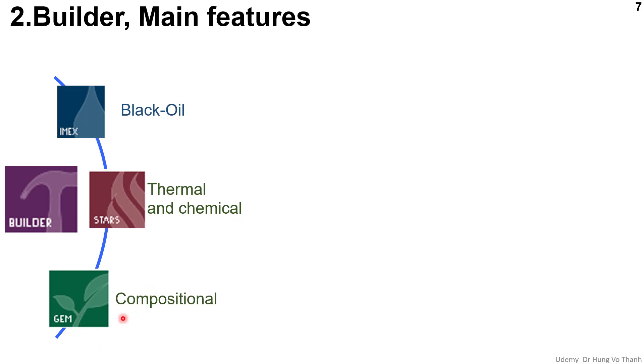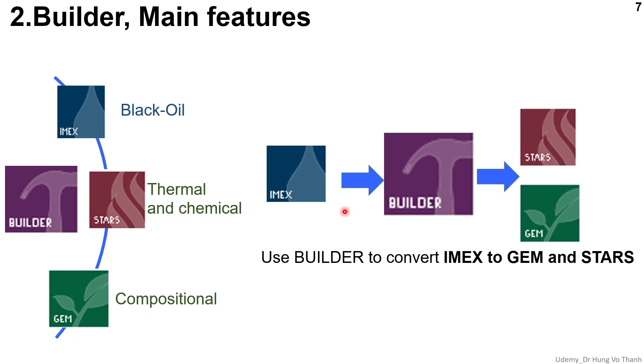Basically, you need to perform the Builder and STARS with the IMEX. And then, from the IMEX, you use the Builder to convert directly to STARS and GEM. So basically, you need to build the IMEX first and the other simulators will be easy.